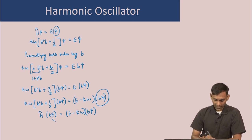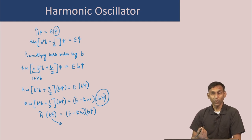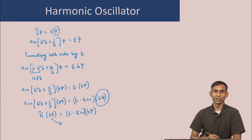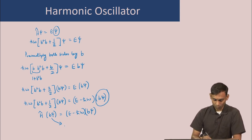This operator b acts on an eigenfunction of the Hamiltonian and gives a new eigenfunction with eigenvalue lower by ℏω. Since this lowers the energy, it is called the ladder-down operator.